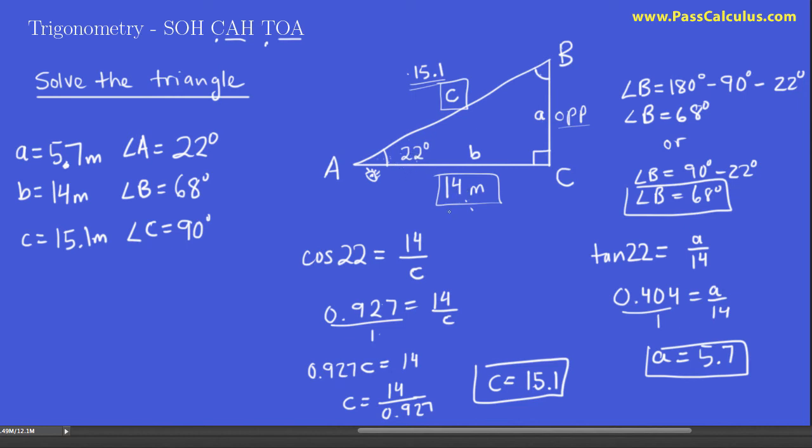Like I said, the reason for that is just because if you make a mistake on one of these other values and then you use it to find the next value, that next value will also be wrong. Whereas if you use the given information all the time, even if you make a mistake on a previous value, you still stand a chance of getting the next value correct. So we've solved the triangle, which in other words, we found all the angles and all the sides.